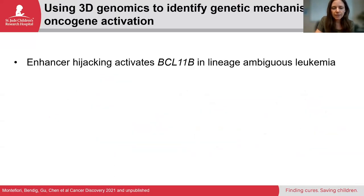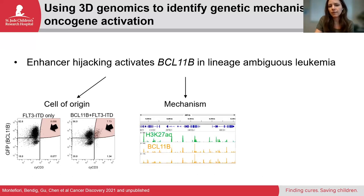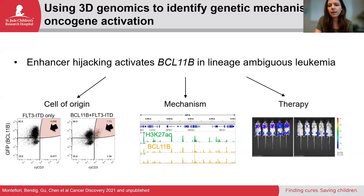Identifying that BCL11B is the target of these translocations and the driver of this subtype—since it's found in all of the cases—is important because it now allows us to dig further into the biology of this disease. For example, we can start to study the cell of origin, showing that BCL11B is sufficient to drive expression of CD3 in otherwise extrathymic progenitor cells. We can use this knowledge to study the mechanism by which BCL11B is disrupting gene regulation to drive transformation, and to pursue new therapeutic options.